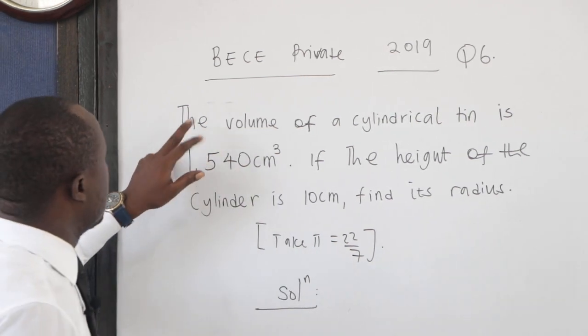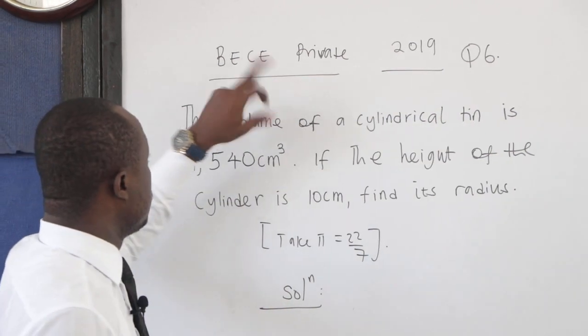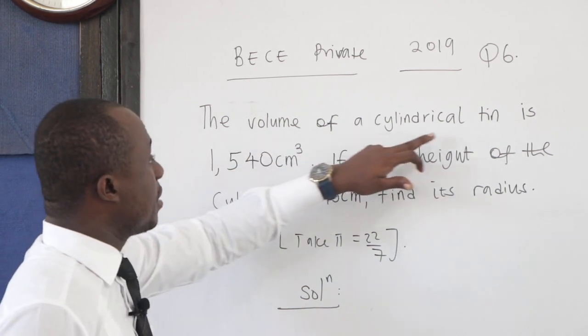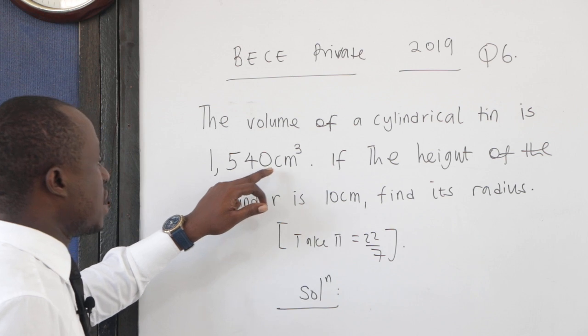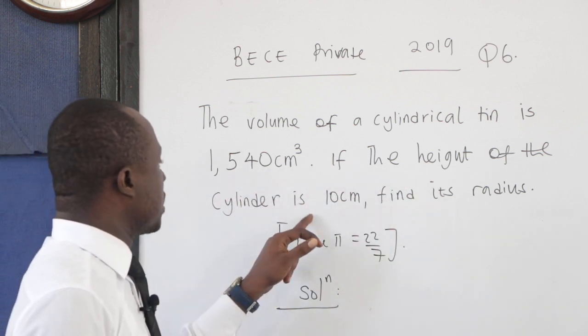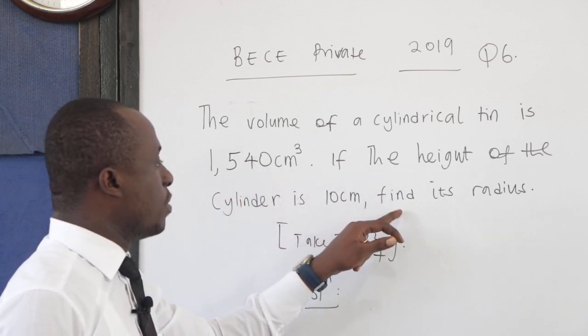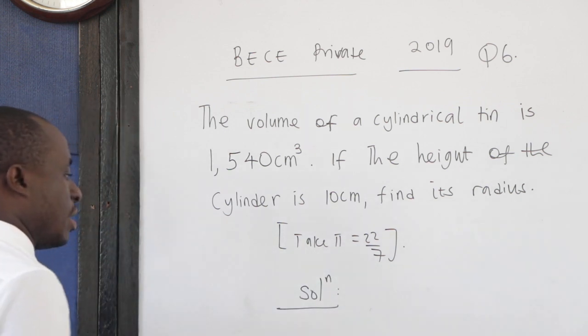Okay, let's consider this example, this 2019 BECU question. The volume of a cylindrical tin is 1,540 cm³. If the height of the cylinder is 10 centimeters, you have been asked to find the radius of the cylinder.